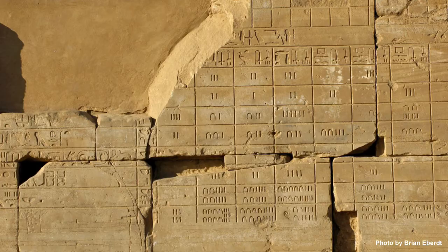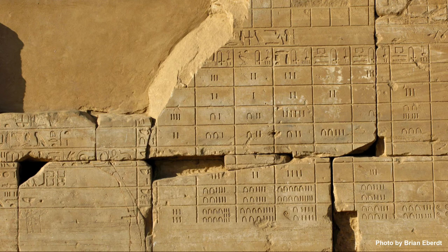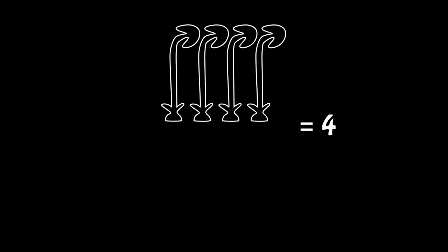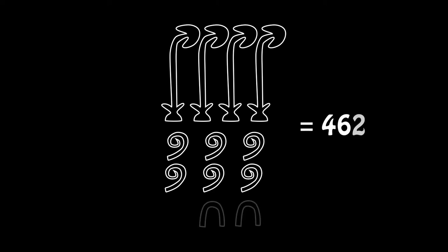In fact, you can go to the temple at Karnak, and you can see that the numbers are just put in boxes. Here's an example. This is 4,622. So here the number is written vertically, but we still know what it means.